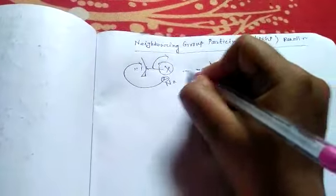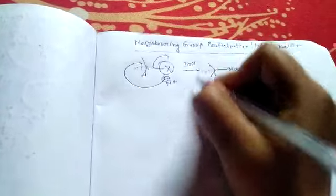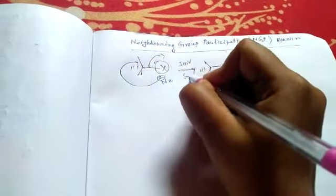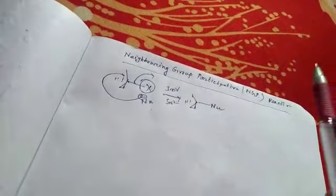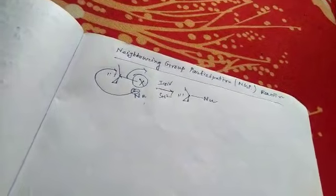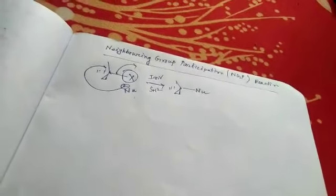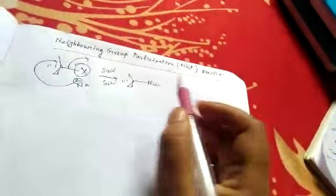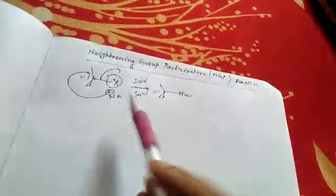Look, here complete inversion takes place as it is an SN2 type reaction. And neighboring group participation is also a substitution nucleophilic reaction. Here neighboring group or second functional group participates in substitution nucleophile reaction and complete retention takes place. Here it is inversion, but in neighboring group, complete retention takes place. Let's see an example.